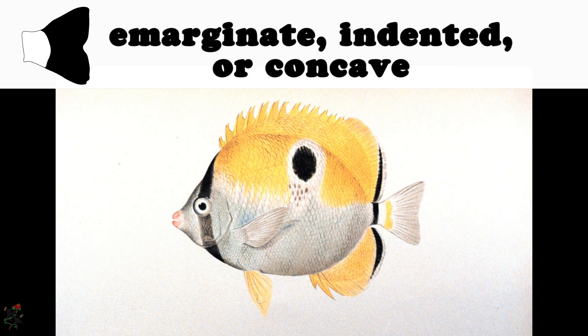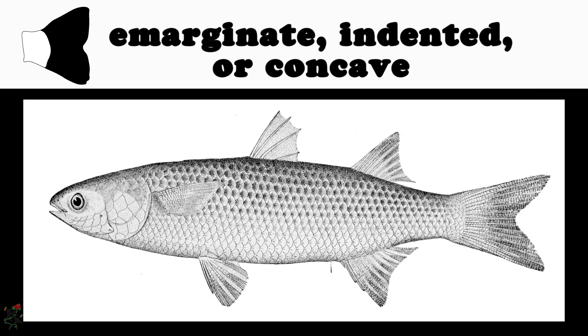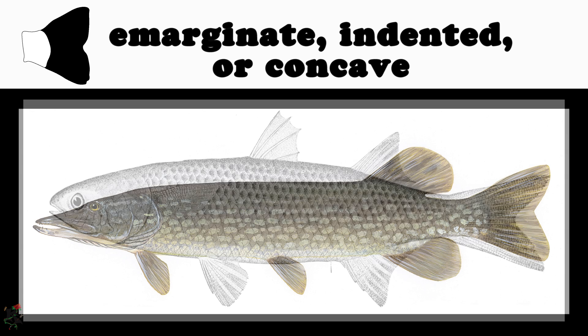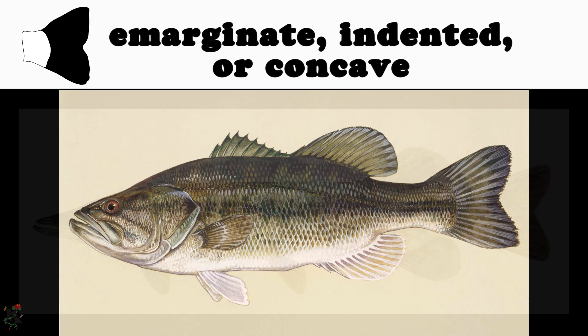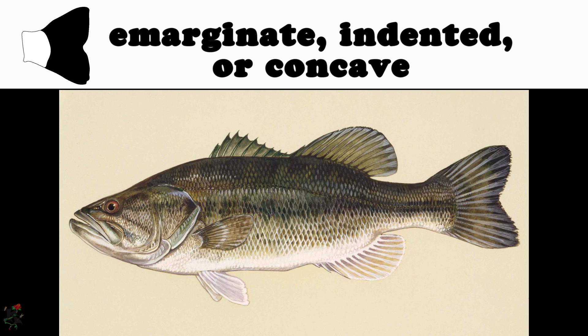Emarginate, indented, or concave. Notice the indentation on the teardrop butterfly fish, and a deeper indentation on this mullet. Species of the genus Esox have indented caudal fins, as we see in the northern pike. Largemouth bass also have concave tail fins.